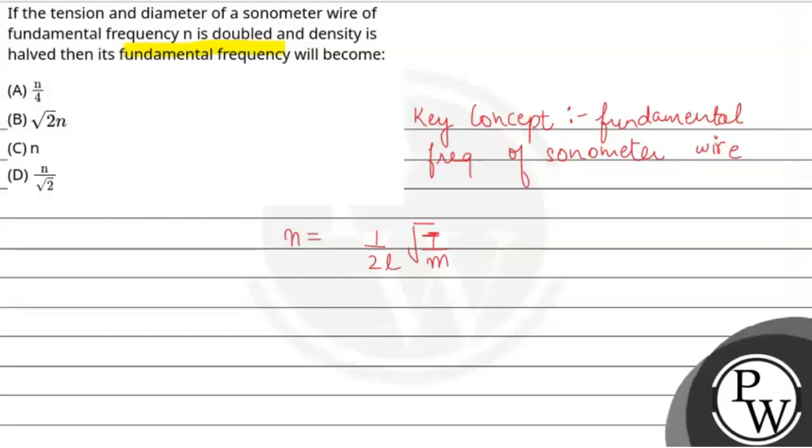This means T is tension, L is length and m is mass. But this question means tension, diameter and density is given. So, mass is changed. This is m upon L. This is not mass, this is m over L. So, m is given by mass of wire divided by length of the wire.